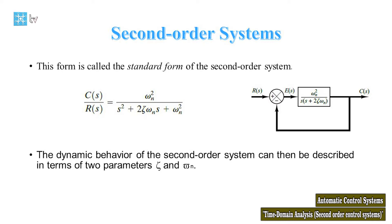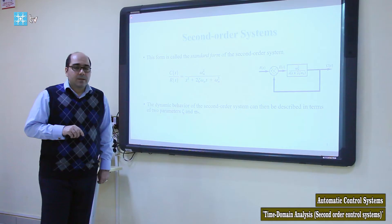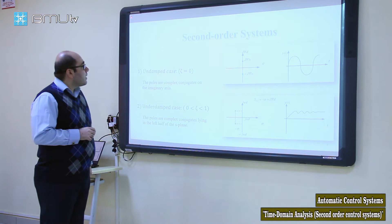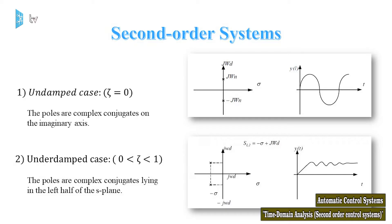The dynamic behavior of the second-order system can be described in terms of two parameters: zeta (ζ) and omega_n (ωₙ). Let's investigate the poles of the second-order system. For the first case, we suppose that the poles are complex conjugates located on the imaginary axis — that is, we have two imaginary roots of the denominator polynomial.